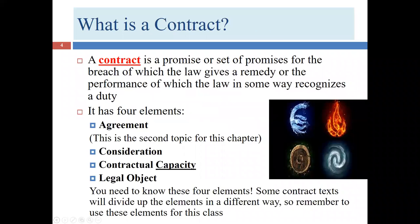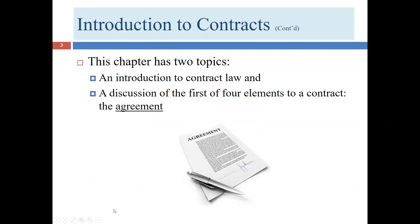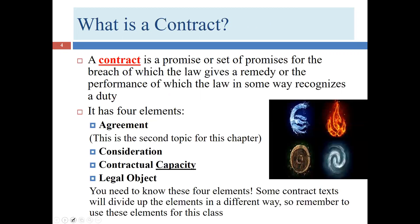We're going to start here with an introduction to contract law, then talk about agreement, and conclude with more introduction to contract law. In our first lecture, we covered the first half of the agreement section. We talked about what a contract is and the four elements: agreement, consideration, contractual capacity, and legal object.